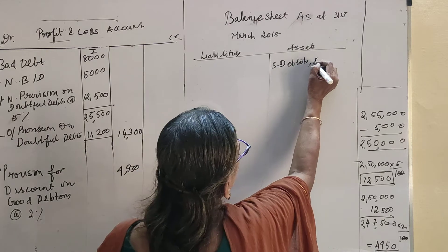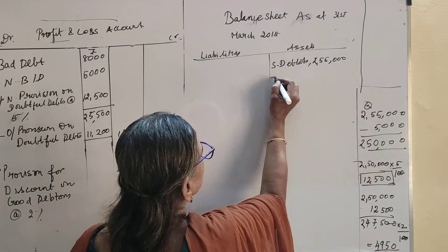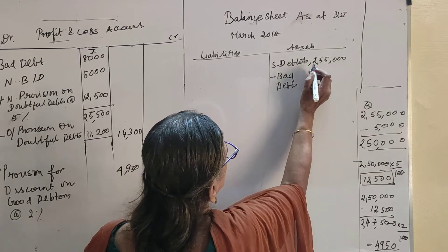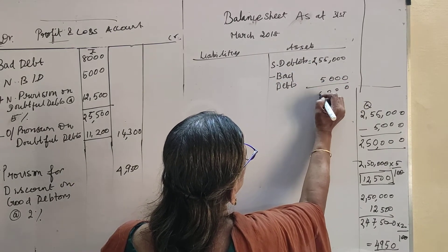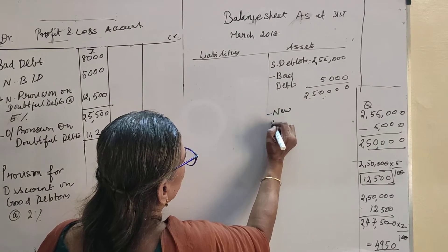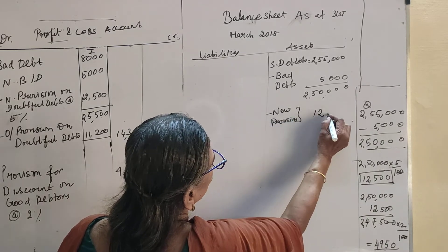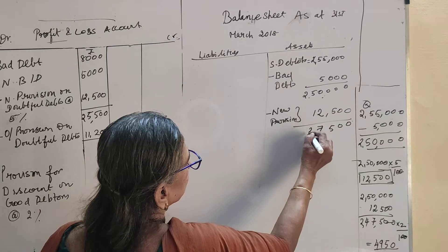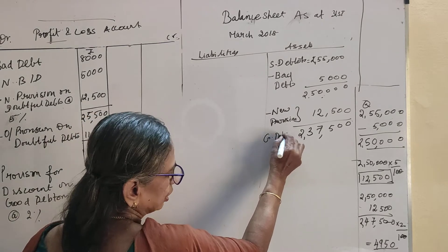The balance sheet shows debtors as 2,55,000 according to the trial balance. Minus new bad debt according to the additional information — we are going to subtract 5,000. Then the balance gives us debtors, and from this we are creating minus new provision. New provision is created: 12,500. This gives us good debtors, and on good debtors only you are creating the provision.